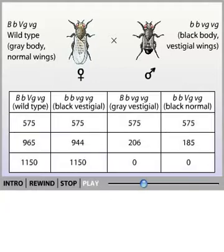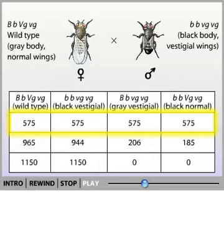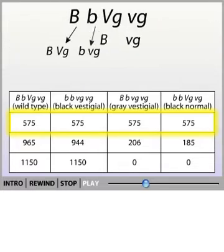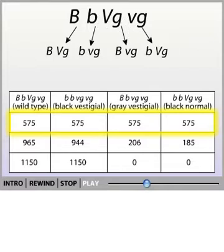Mendel's law predicts equal numbers of each of the four possible types of offspring. The father always contributes a recessive allele, and the mother contributes the dominant allele 50% of the time. The dominant allele for one gene should be equally likely to pair with either the dominant or recessive allele for the other gene.